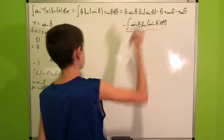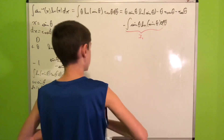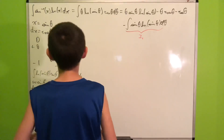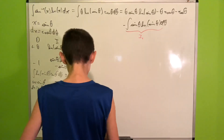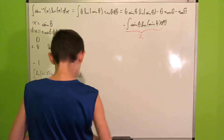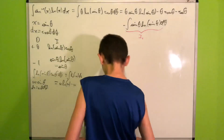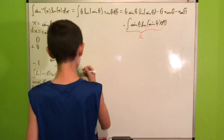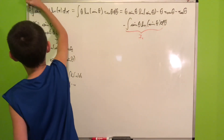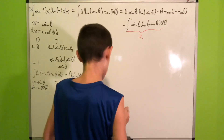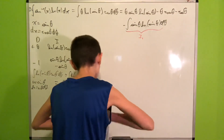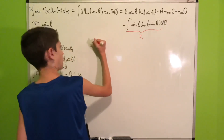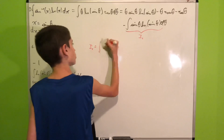We'll call our original integral I, and this new integral — the integral of sin θ·ln(sin θ) dθ — we'll call I1. Giving integrals names is useful, so let's focus on I1.